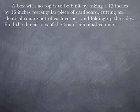More precisely, we're building a box with no top in the following way. We take a 12 by 16 inches rectangular piece of cardboard, we cut from each corner an identical square, and then we fold up the flaps. And folding up the sides, we obtain a box, but with no top.